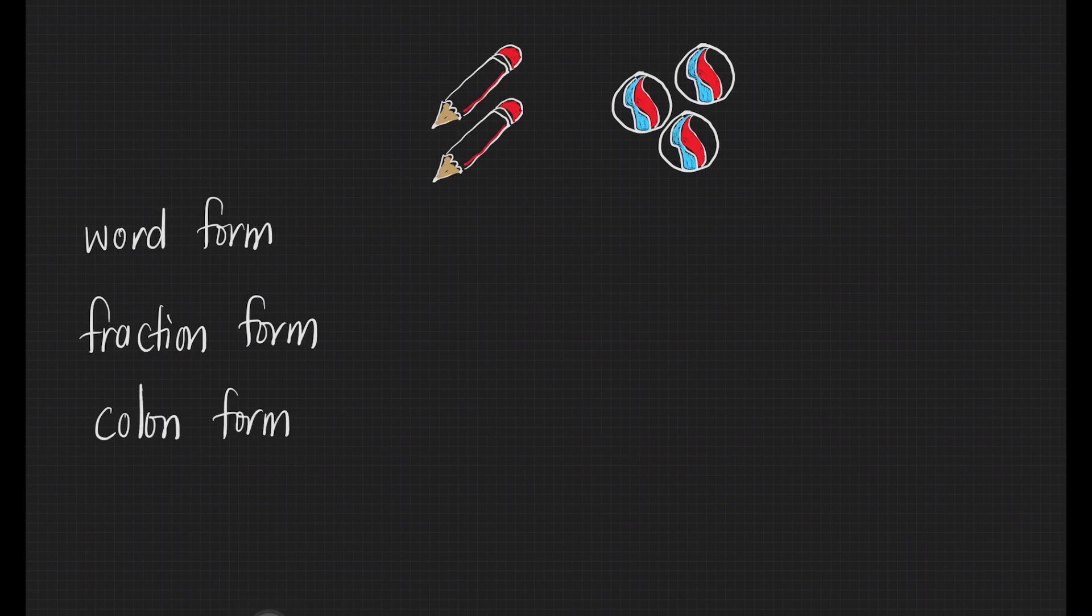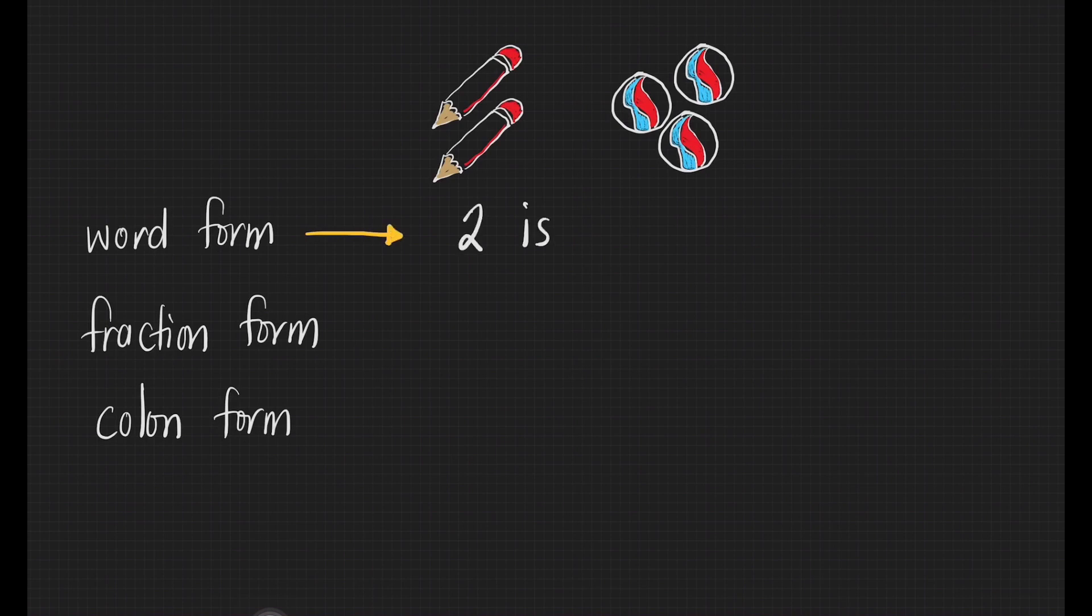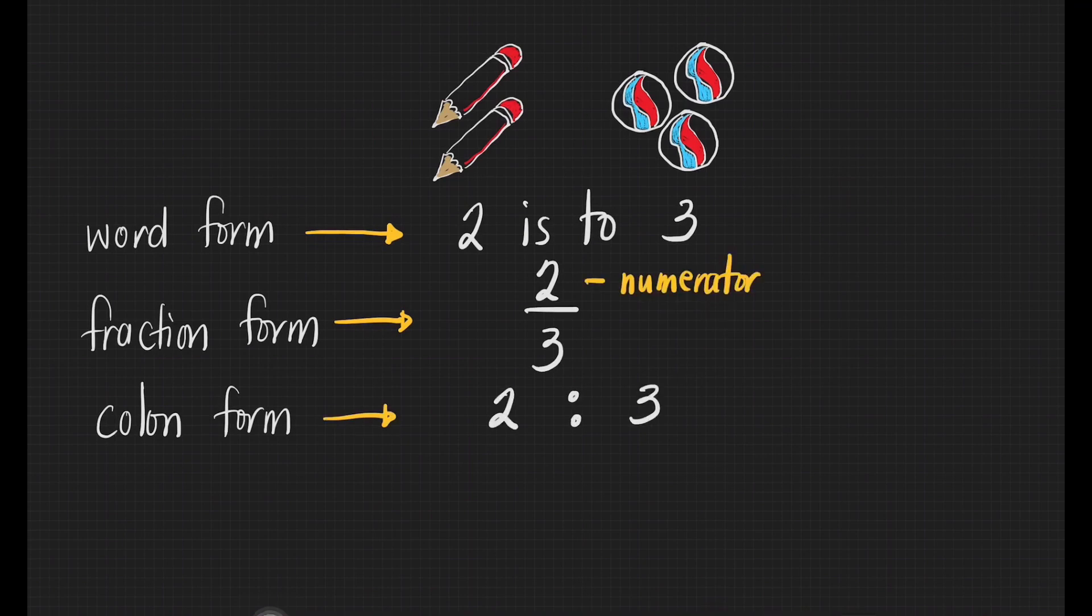What is the ratio of the number of pencils to the number of marbles? Based on our given, we can write this one into three different ways. Word form: 2 is to 3. Fraction form: 2 thirds. And for the colon form: 2 is to 3. We have to take note that we have the numerator and the denominator.